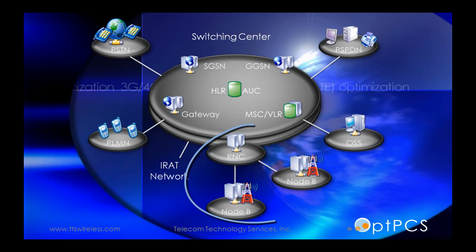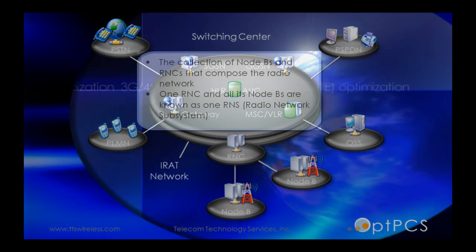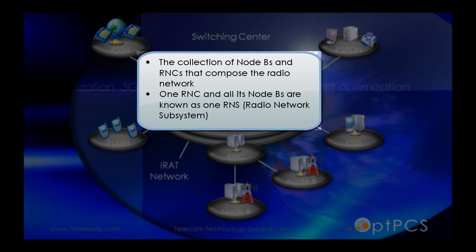The Universal Terrestrial Radio Access Network, or UTRAN, is the collection of Node Bs and RNCs that compose the radio network. One RNC and all its Node Bs are known as one RNS.